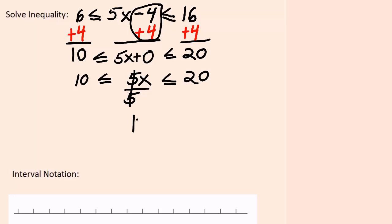so I have to divide by 5 so that I can get 1x, but I have to do the same thing to all three parts of this three-part inequality. That leaves me with 2 is less than or equal to 1x is less than or equal to 4.